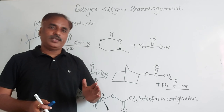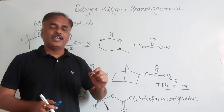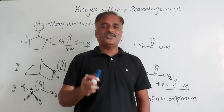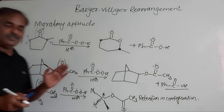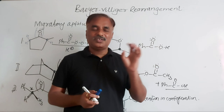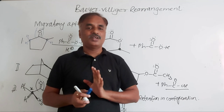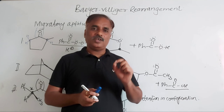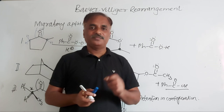So this is Baeyer-Villiger rearrangement — migration of alkyl group depending on migratory aptitude. In case of symmetrical ketone it is very easy. In case of unsymmetrical ketones, migration depends on migratory aptitude: tertiary > secondary > aryl > primary > methyl. If you have any doubts, you can put them in the comment box and I will get back to you. Thank you.